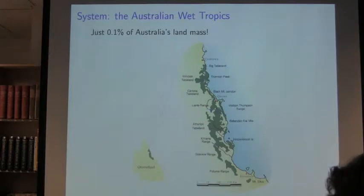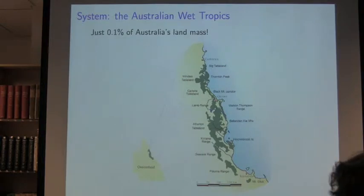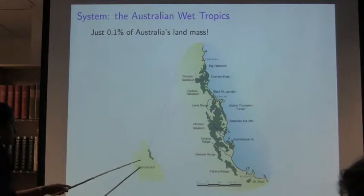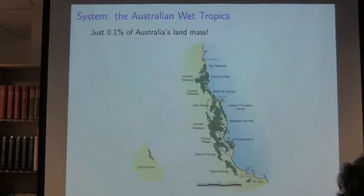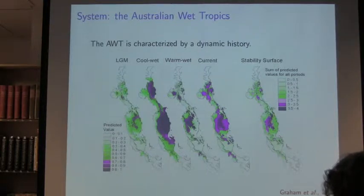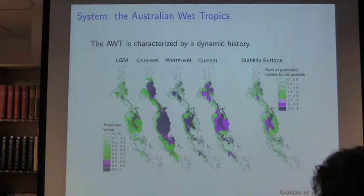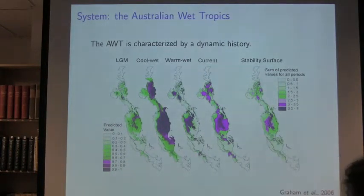The system in which I do this work is the Australian Wet Tropics, where Craig has done a lot of his work over the last 20 years. It's a narrow strip of rainforest in northeast Queensland — a very small portion of Australia's land mass. The AWT is characterized by a very dynamic history. In this paper by Graham et al. in 2006, they used pollen core data to reconstruct the rainforest through time. The rainforest through repeated glacial cycles is currently pretty continuous, but in the past during glacial cycles it broke into two major refugia — one in the north and one in the south.